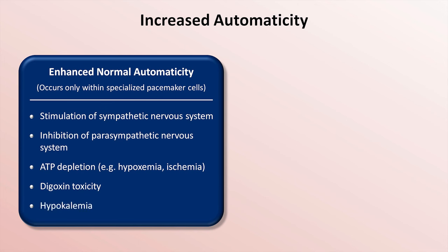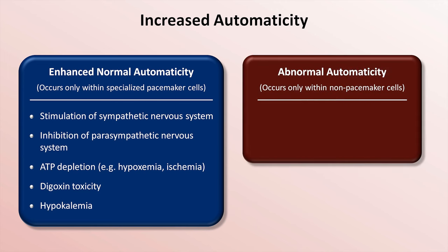These last three etiologies all share in common a reduction in the activity of the membrane sodium-potassium pump. In contrast, abnormal automaticity only occurs within non-pacemaker cells in which it is associated with a decrease in the resting potential, the exact mechanism of which is complex and not completely understood. The main etiologies of abnormal automaticity are acute ischemia and/or reperfusion, such as what can occur immediately after stenting of an acutely occluded artery during cardiac cath. Another cause is congestive heart failure.